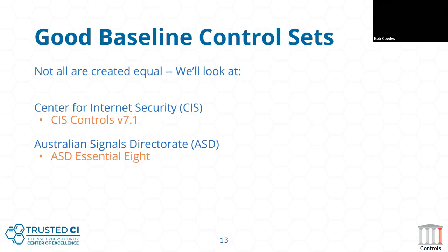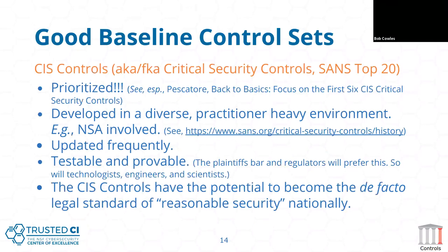Good baseline control sets are not all equal. The CIS critical security controls — you might have heard of these as the SANS Top 20 — have morphed into a separate organization, the Center for Internet Security, that now shepherds them. There was a paper called 'Back to Basics' saying focus on the first six CIS critical security controls. Recently, CIS in version 7.1 further prioritized those controls into implementation groups one, two, and three, saying if you're this kind of organization, concentrate on the corresponding implementation group.